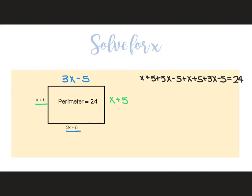Once you have your equation written, you would combine your like terms. I have x plus three x plus three x, so that would be eight x's total. I then have positive five, minus five, positive five, minus five, which is zero.